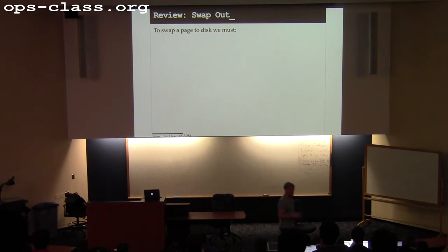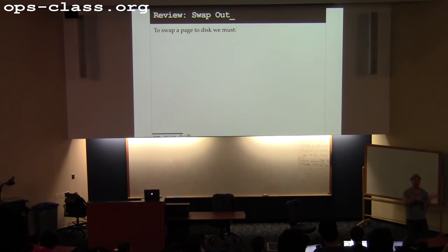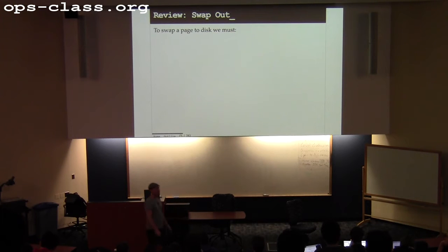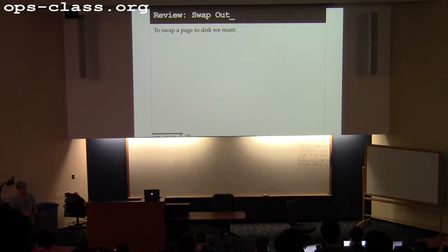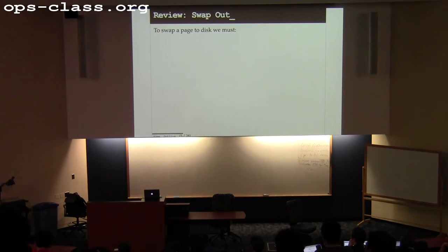So we talked about swapping a page — what does it mean to swap a page out? What do I have to do? Remove the page from the TLB, then copy the contents to disk, then update the page table entry. Three steps: remove the translation from the TLB, copy the contents of the page to disk, and update the page table entry. I have to update my own internal data structure so I know where this page is. If I don't do that, the next time it gets faulted, I don't know where it went.